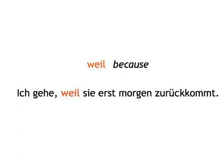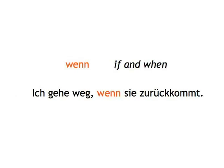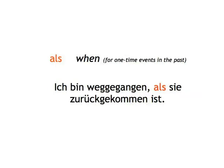Weil — because: Ich gehe, weil sie erst morgen zurückkommt. I'm going because she's only coming back tomorrow. Wenn — if and when: Ich gehe weg, wenn sie zurückkommt. I'll go away if and when she comes back. Als is another German conjunction for English 'when,' used when referring to one-time events in the past. Ich bin weggegangen, als sie zurückgekommen ist. I went away when she came back.